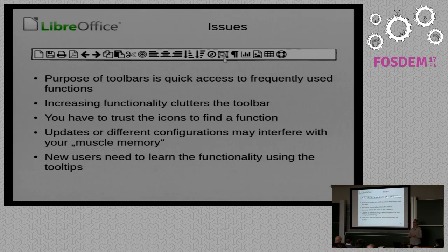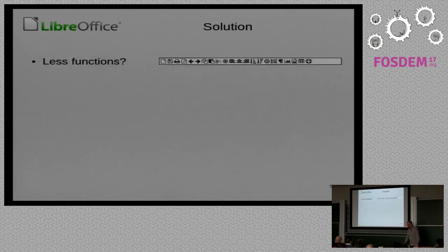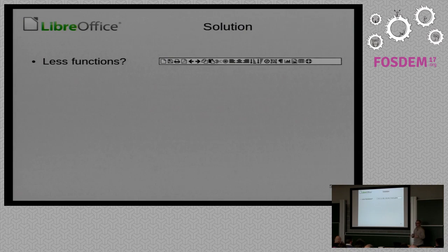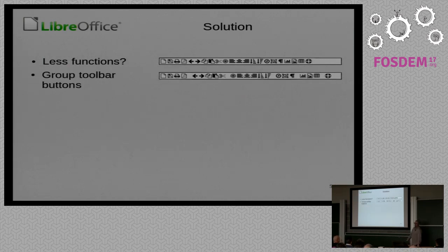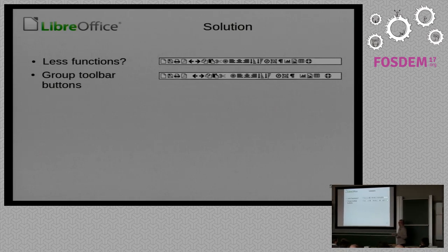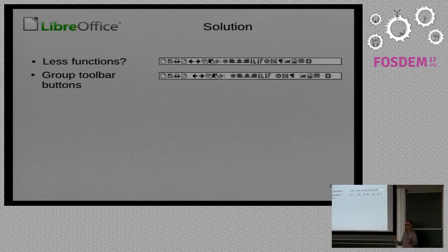So what could you do to improve usability facing all these issues? You could of course remove functionality from the toolbar and make it cleaner — it's a good approach, but developers are not easy to convince to remove functionality. Another option: grouping. Grouping is always a good idea; it makes it easy to quickly find a chunk in the amount of information. The leftmost group is file information, the next one is about clipboard and so on — just a little space between groups gives you additional information.